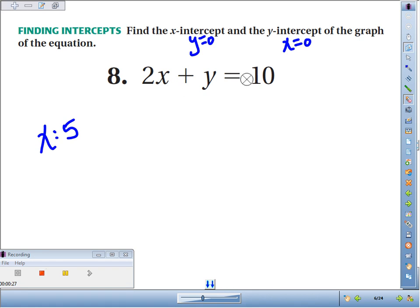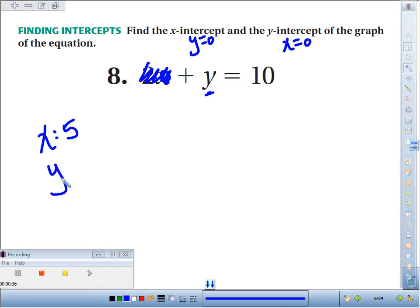If we want to find the y-intercept, we make x 0. Well, 2 times 0, now that side disappears, and we just get y equals 10. So the y-intercept is 10. When x is 0, y is going to be 10.